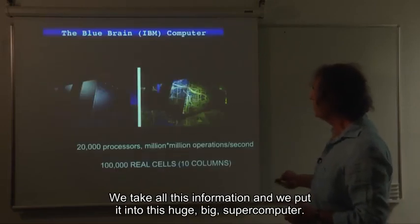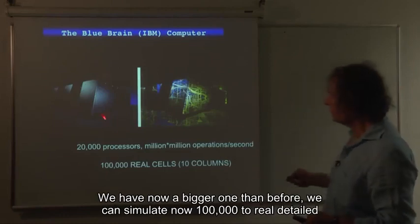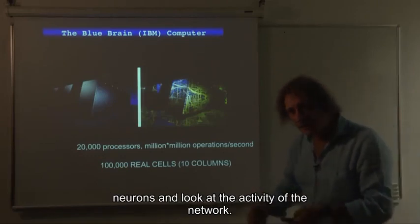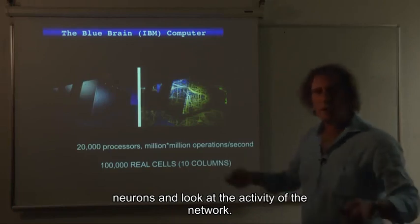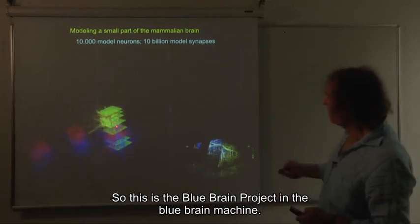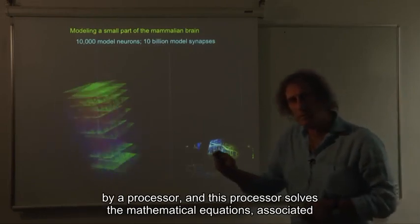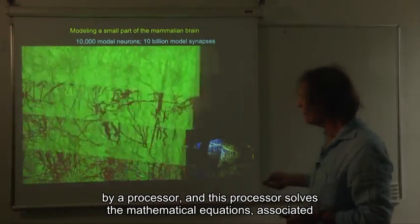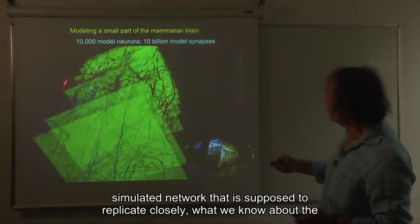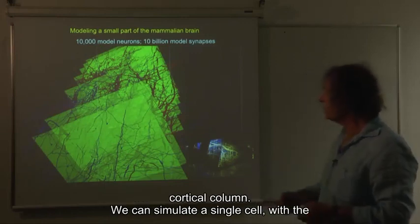We take all this information, and we put it into this huge, big supercomputer. We have now a bigger one than before. We can simulate now 100,000 real, detailed neurons, and look at the activity of the network. So this is the blue brain project in the blue brain machine. So here we take one cell schematically after another cell, each one represented by a processor, and this processor solves the mathematical equations associated with this neuron, and with a connection between them, and eventually we get a simulated network that is supposed to replicate closely what we know about the cortical column.